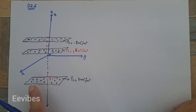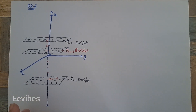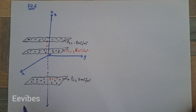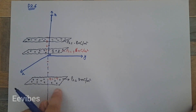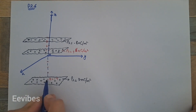Hi everyone, this is Asma Mushtaq from the WIPS. In this video lecture, I am going to solve a real problem where three infinite uniform sheets of charges are located in free space, just as depicted in this diagram. You can see they are lying in the XY plane and along the Z axis.